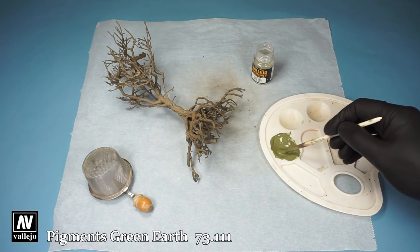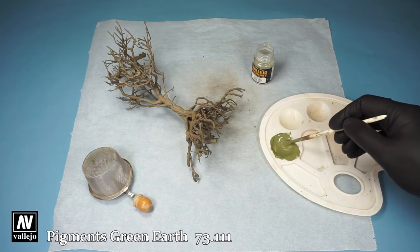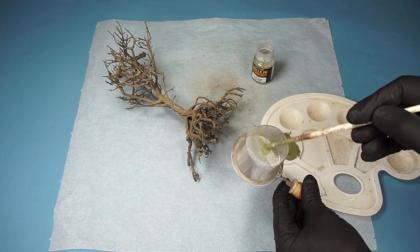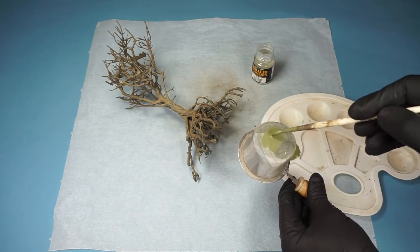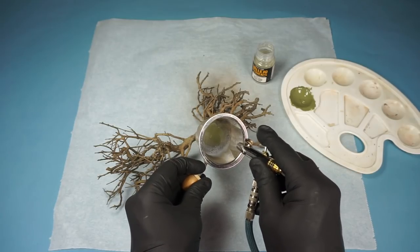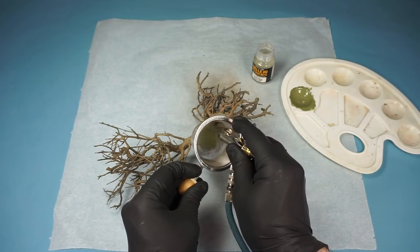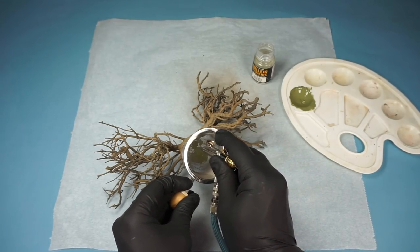To create some spots of lichen onto the trees I've mixed a bit of pigment powder with some water. It's then added onto this fine tea strainer and applied onto the trees using my airbrush. This will give it a random splatter effect.